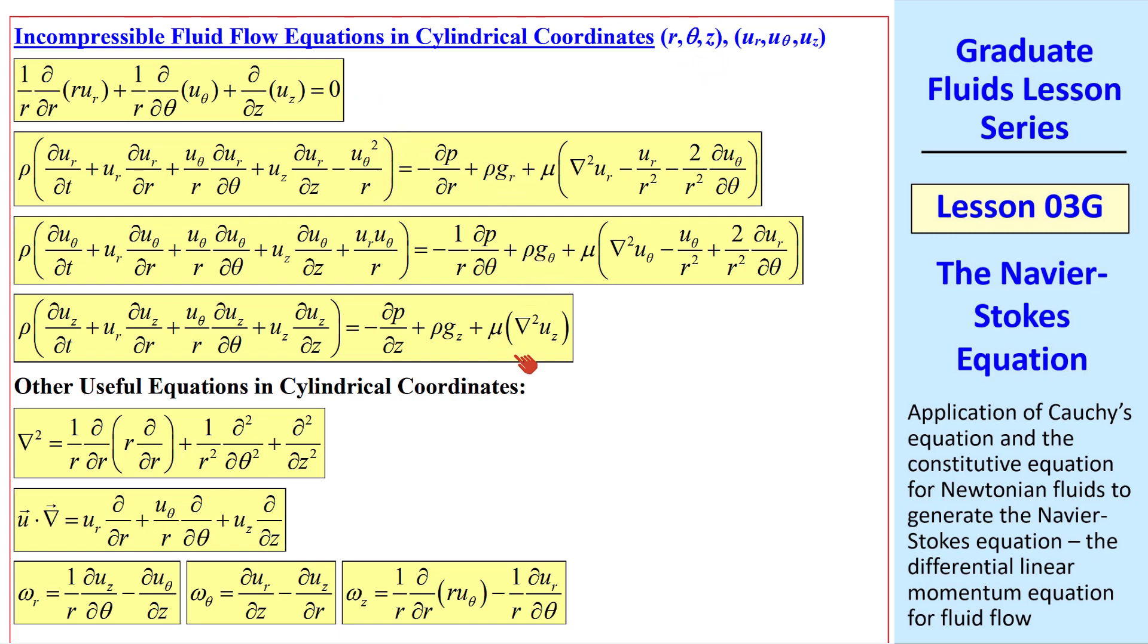and the three components of the Navier-Stokes equation for u r, u theta, and u z. Notice some of these extra terms, like u theta squared over r, or u r, u theta over r, etc. These occur because when you move in the theta direction, you also change the direction of radius r. That's what leads to these extra terms.